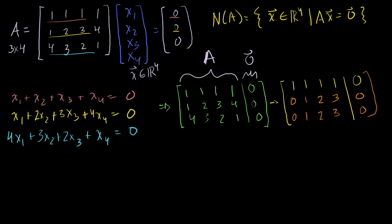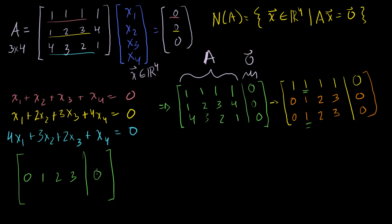Now to get reduced row echelon form, I need to eliminate entries above the pivot in column 2. Keep the middle row as (0, 1, 2, 3 | 0). Replace row 1 with row 1 minus row 2: (1, 0, −1, −2 | 0). Replace the last row with last row minus middle row: (0, 0, 0, 0 | 0).